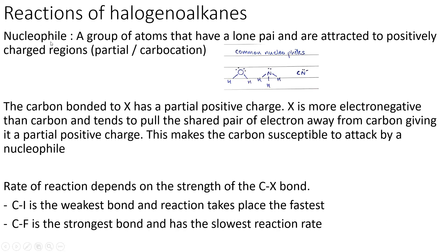Before we begin the reactions of halogenoalkanes, we need to know what a nucleophile is. A nucleophile is a group of atoms that have a lone pair and are attracted to positively charged regions, which can be either partial positive charges or a carbocation. Common nucleophiles are ammonia, cyanide ion (C≡N⁻), or water. The carbon bonded to X has a partial positive charge because X is more electronegative than carbon and pulls the shared pair of electrons away, making the carbon susceptible to nucleophilic attack.